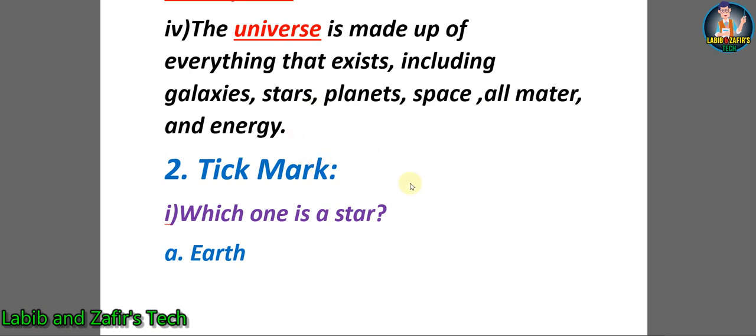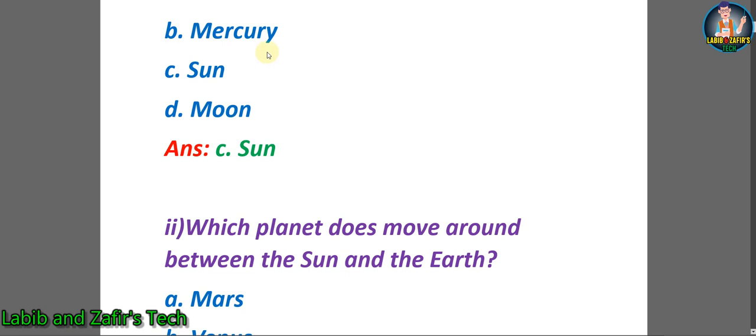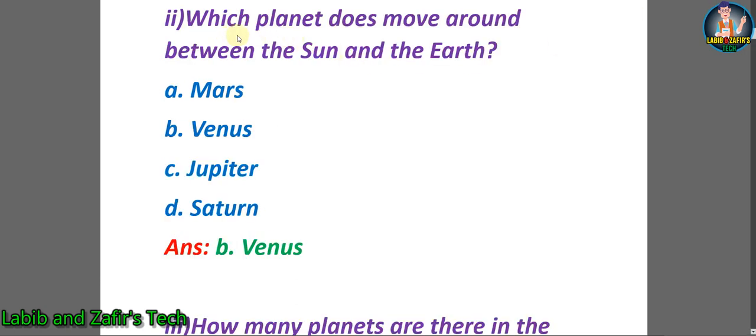Now students let's go through some tick marks. Number one: Which one is a star? A. Earth, B. Mercury, C. Sun, D. Moon. So the correct answer will be C. Sun.